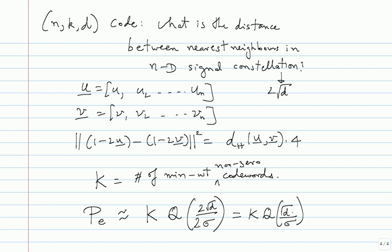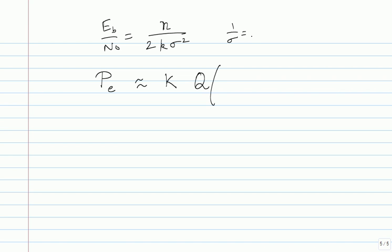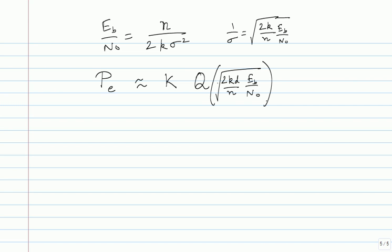To compare with an uncoded system I need Pe as a function of Eb/N0. Since 1/σ² = 2R · (Eb/N0) and R = K/N, we get Pe ≈ K_D · Q(√(2KD/N · Eb/N0)). An uncoded BPSK system gives Pe = Q(√(2 Eb/N0)). So the coded system replaces Eb/N0 by (KD/N) · Eb/N0 inside the Q function.